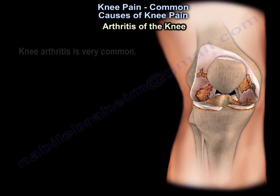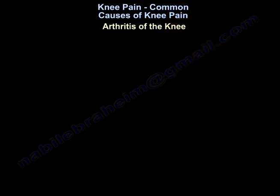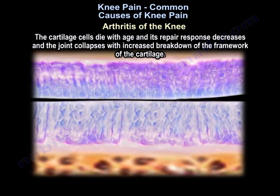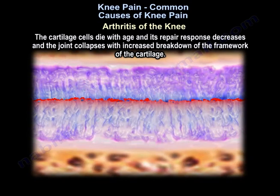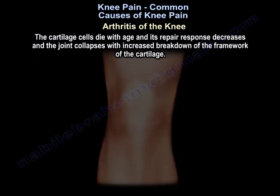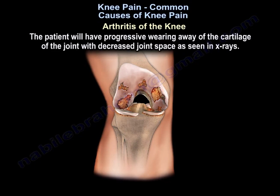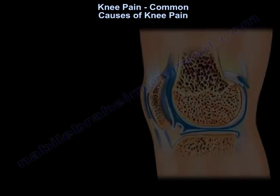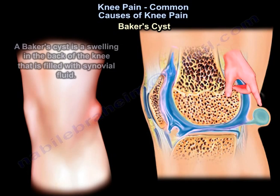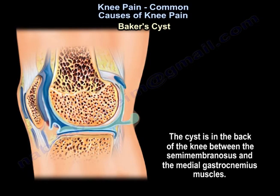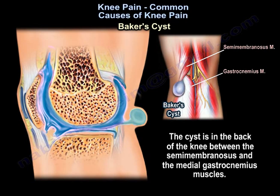Arthritis of the knee is very common. The cartilage cells die with age and the repair response decreases, causing the joint to collapse with increased breakdown of the cartilage framework. The patient will have progressive wearing away of the cartilage of the joint, with decreased joint space as seen on x-rays. Another source of pain is a Baker's cyst — a swelling in the back of the knee filled with synovial fluid, located between the semimembranosus and the medial gastrocnemius muscle.